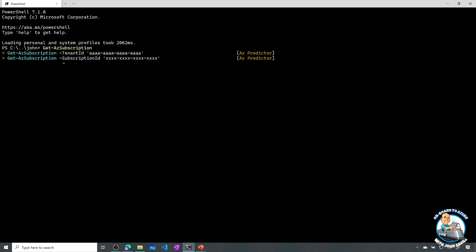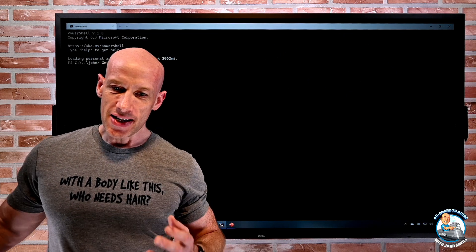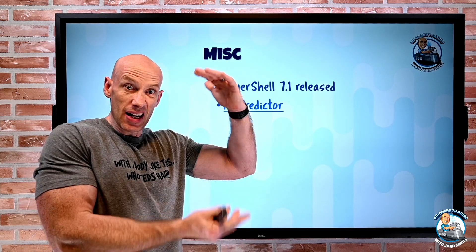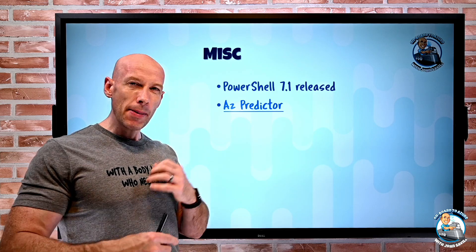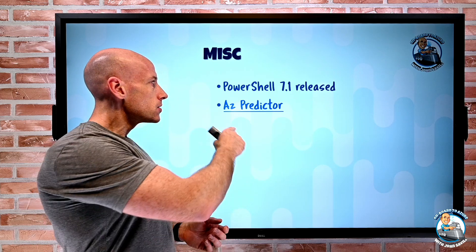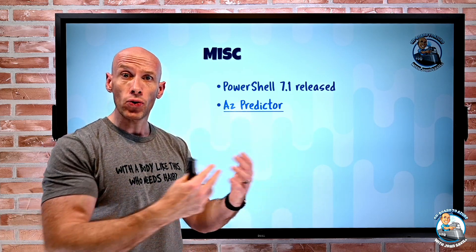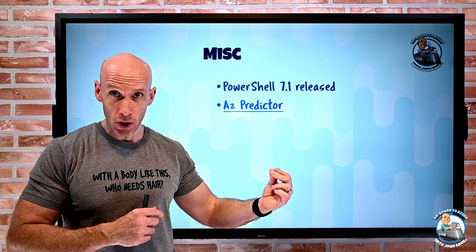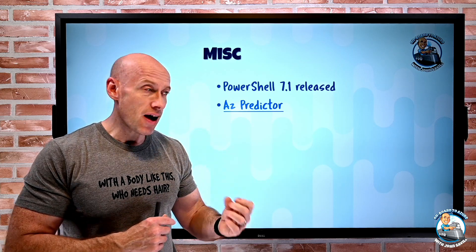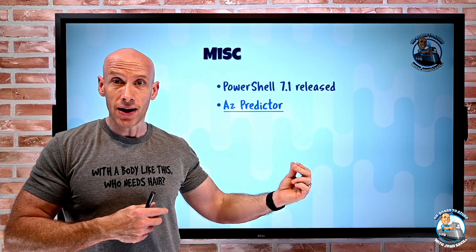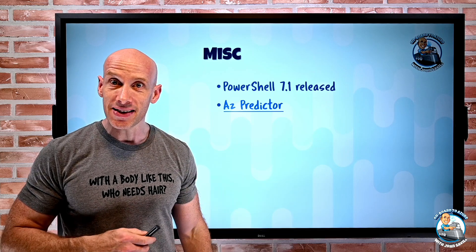You can press Ctrl-Z to revert or Escape to dismiss suggestions. If you're new, you probably want the list view that shows all the parameters. If you're more experienced, the inline view is great to speed things up. To set this up: install PowerShell 7.1, then install the preview version of the PS ReadLine module, then install AZ Predictor which is a plug-in for PS ReadLine. That gives you the new capability — pretty cool.